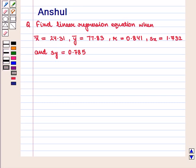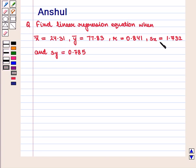Hello and welcome to the session. In this session we are going to discuss the following question: Find the linear regression equation when x̄ = 24.31, ȳ = 77.83, r = 0.841, sx = 1.732, and sy = 0.785.